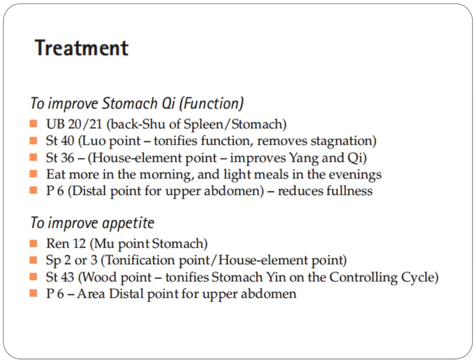Pericardium 6, a distal point for the upper abdomen, reduces fullness. To improve appetite, we use REN12, which is the mu point of the stomach. Spleen 2 or 3, the tonification and earth element points. Stomach 43, the wood point, tonifies stomach yin on the controlling cycle. Pericardium 6 is also a distal point for the upper abdomen.